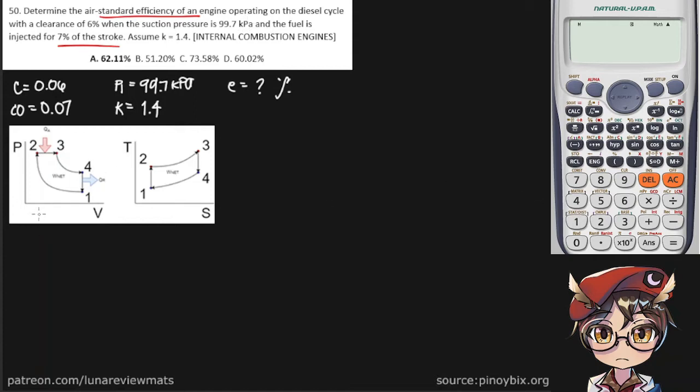There are two ways to find our cycle efficiency. First one is rather straightforward. You just divide net work by heat added. But as you can see, we don't actually have enough information to get either the work net or the heat added.